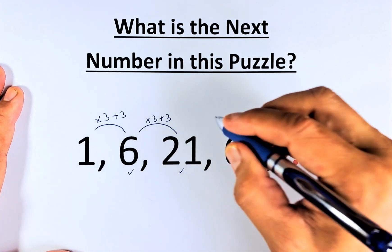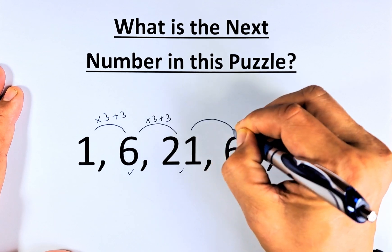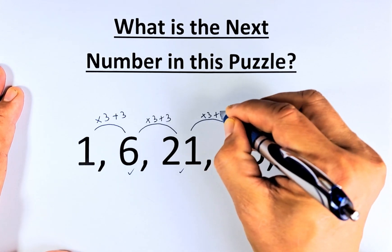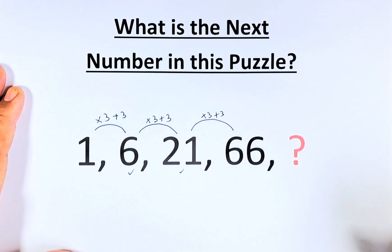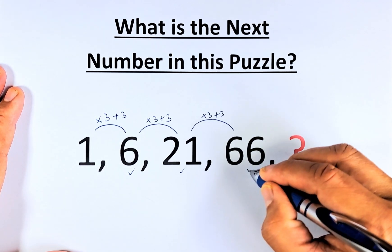And then we are going to confirm it by the last equation. So 21 times 3 plus 3. 21 times 3 is 63, 63 plus 3 is 66.